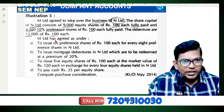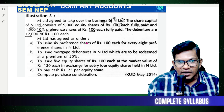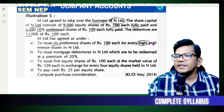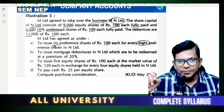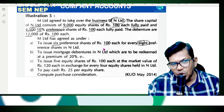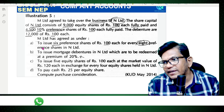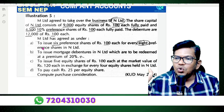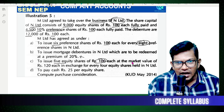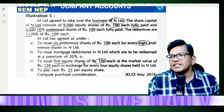M Limited agrees to issue six preference shares of 100 each for every eight preference shares. Also, to issue five equity shares of 100 each at market value of 120, and pay cash of 25 per equity share. Now find the purchase consideration.